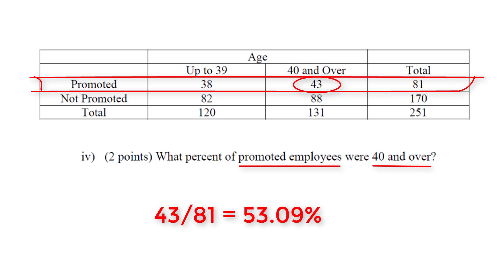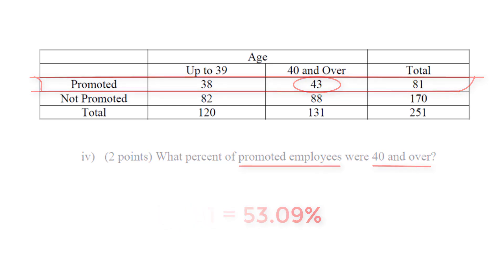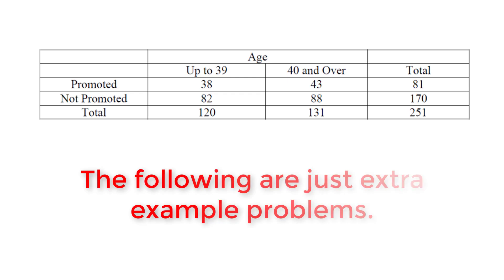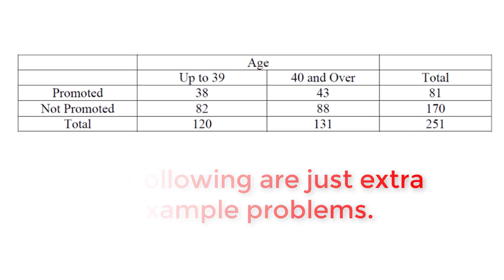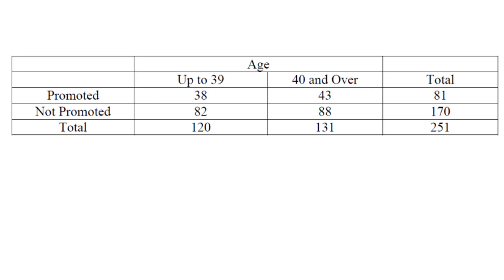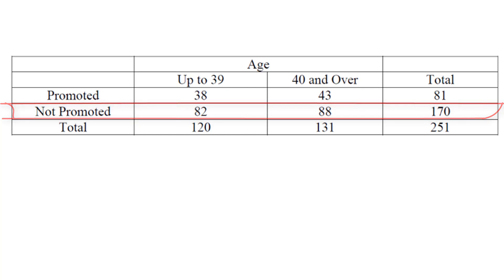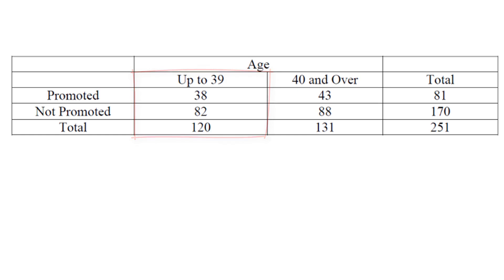I always suggest circling the numbers you're using and figuring out how they relate. Notice the small changes throughout this problem that indicate different types of questions. For example, 'what percent of not-promoted employees' would be a conditional distribution on not-promoted, and 'what percent of employees who are up to age 39' is conditional on the employee being up to 39 years of age.